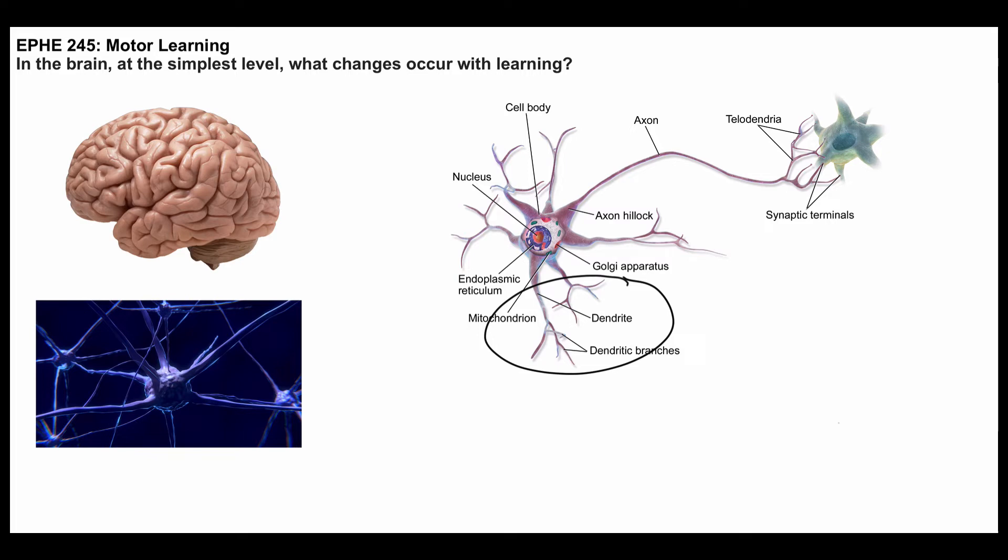Then the neuron itself decides whether it's going to fire. We're going to talk more about that later in the course. If the neuron fires, an electrical signal travels down the axon, and it reaches the synapse here.